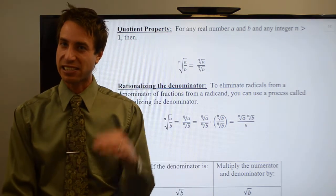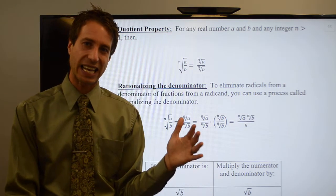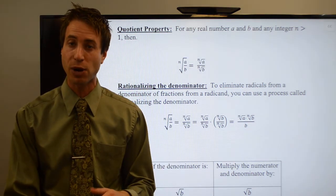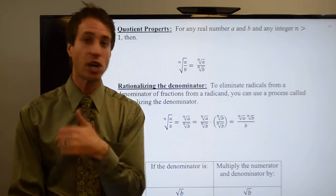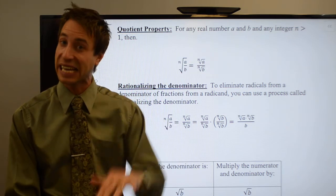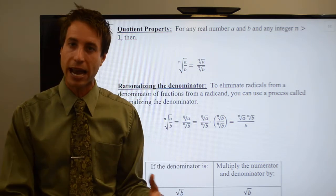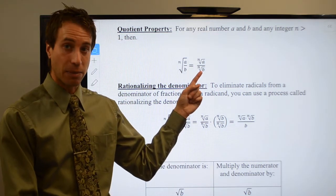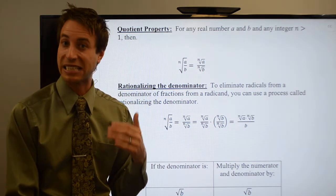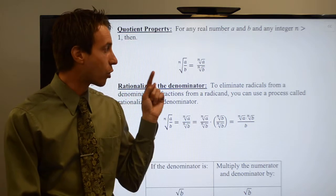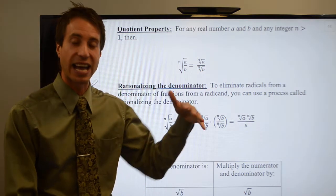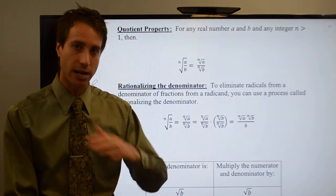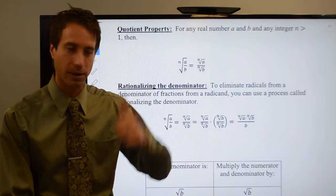But from that list of four things at the beginning of the notes that you need to do to simplify an expression, number four was: you can't have a radical in the denominator. No radicals in the basement. So this nth root of b in the bottom is no good — that's not okay. In order to simplify, I've got to get it out of the denominator and bring it upstairs. No hiding radicals in the basement; everybody's got to be upstairs.